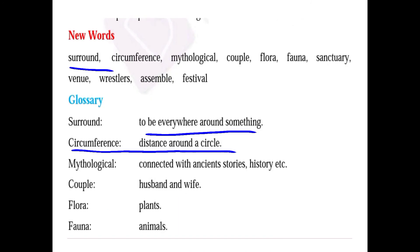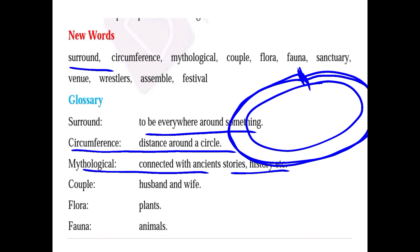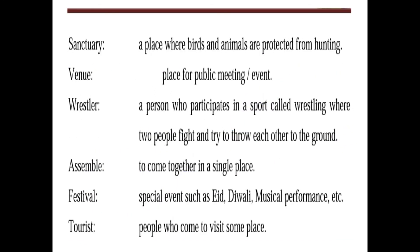Circumference means distance around the circle. 'Mythological' means connected with ancient stories or history that is not based on facts. 'Couple' means husband and wife. 'Flora' means plants and 'fauna' means animals. 'Sanctuary' is a place where birds and animals are protected from hunting — a region where birds and animals are protected from hunting.